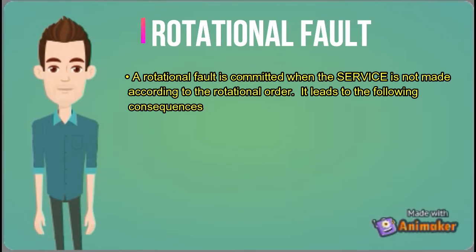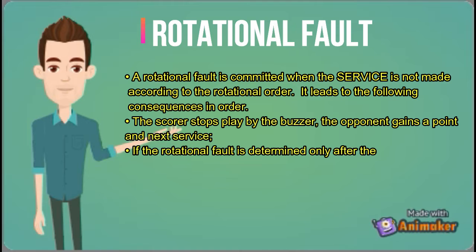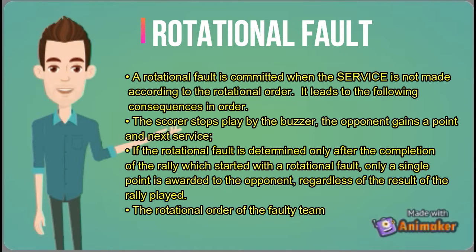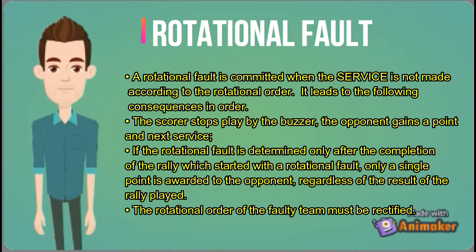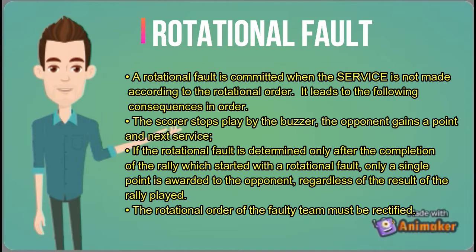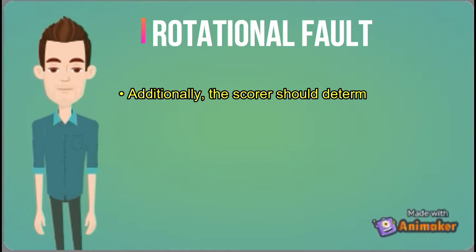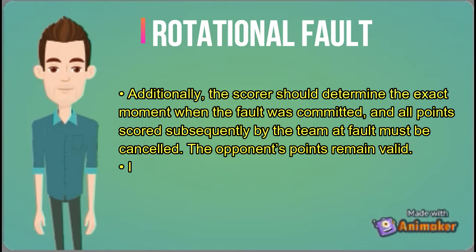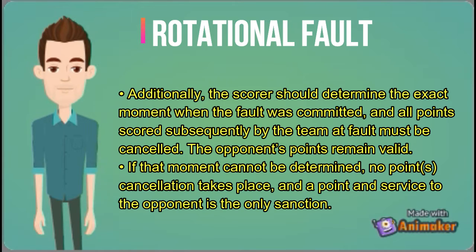Rotational fault. A rotational fault is committed when the service is not made according to the rotational order. It leads to the following consequences: 1. The scorer stops play by the buzzer. The opponent gains a point and next service. If the rotational fault is determined only after the completion of the rally which started with a rotational fault, only a single point is awarded to the opponent regardless of the result of the rally played. The rotational order of the faulty team must be rectified. Additionally, the scorer should determine the exact moment when the fault was committed, and all points scored subsequently by the team at fault must be cancelled.